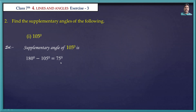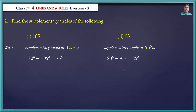75 degrees is the supplementary angle of 105 degrees. Second one: 95 degrees. The supplementary angle of 95 degrees is 180 minus 95, that is equal to 85. So 85 is the supplementary angle of 95 degrees.